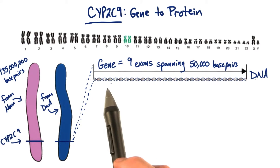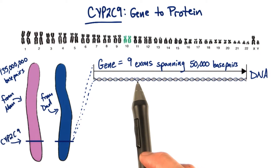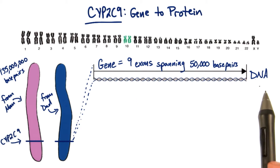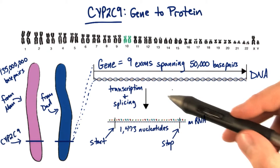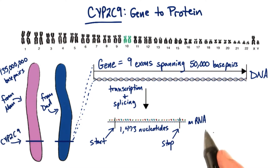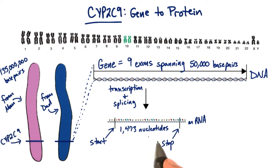The CYP2C9 gene itself contains nine exons spanning more than 50,000 base pairs of DNA. After transcription and splicing, the resulting mRNA contains 1473 nucleotides of coding region between the start and stop codons.